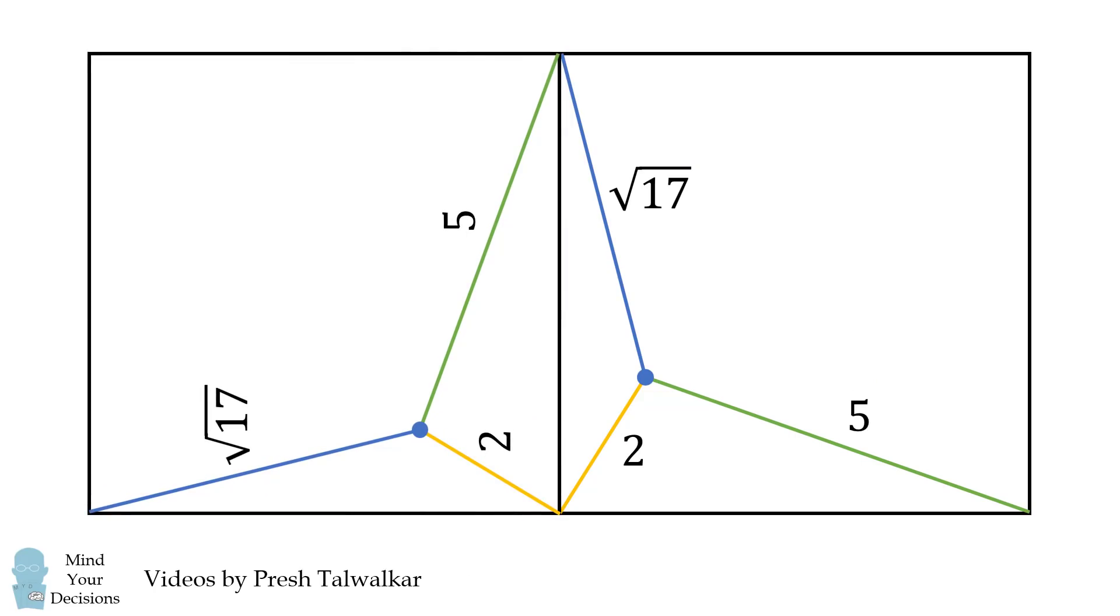Now we'll consider the angles in this diagram. Consider this purple angle. Once it's rotated, it'll end up right here. Since the corner of a square is a right angle, when we rotate this diagram, this will also become a right angle.